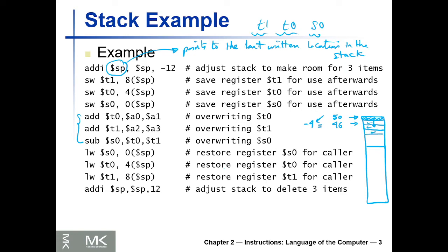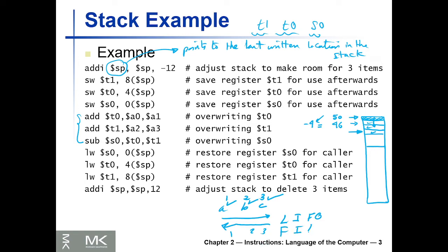When we start to write back, we start from the last location we wrote. So if you store A, B, C in that order — A is number one, B is number two, C is number three — when you read back you start from the opposite: read C first, then B, then A. That's three, two, one — so it's last in, first out (LIFO), or equivalently, first in, last out (FILO).